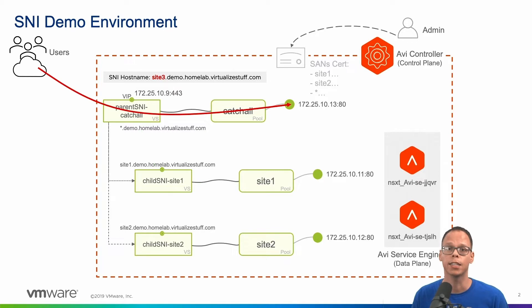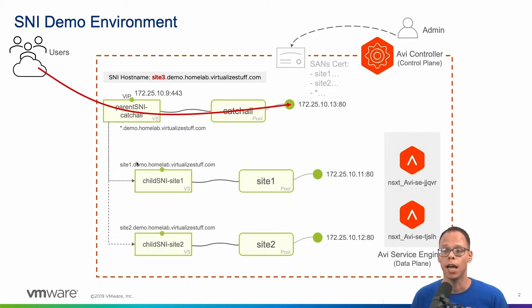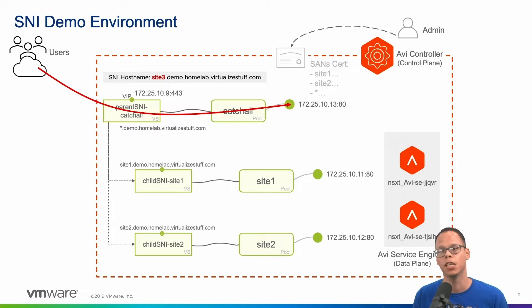Now let's say that same user wants to access site three. Since we don't have a virtual service that matches on that domain, our parent virtual service will handle that request. Okay, enough talking — let's jump into the environment.